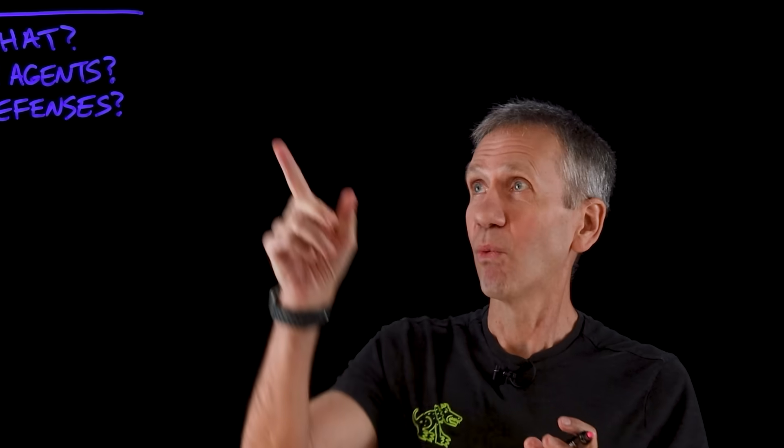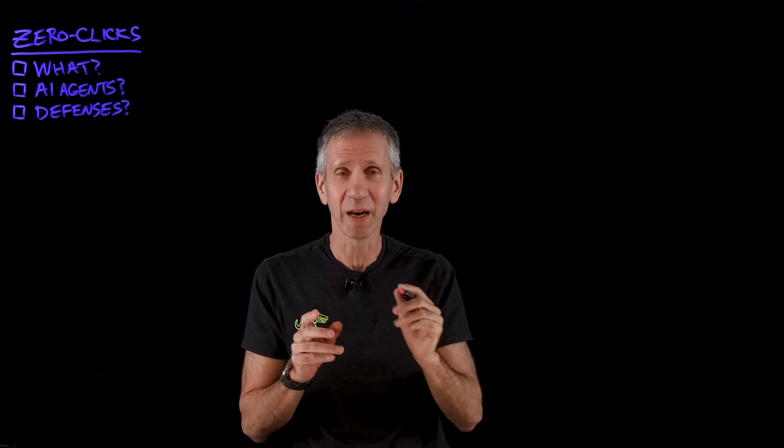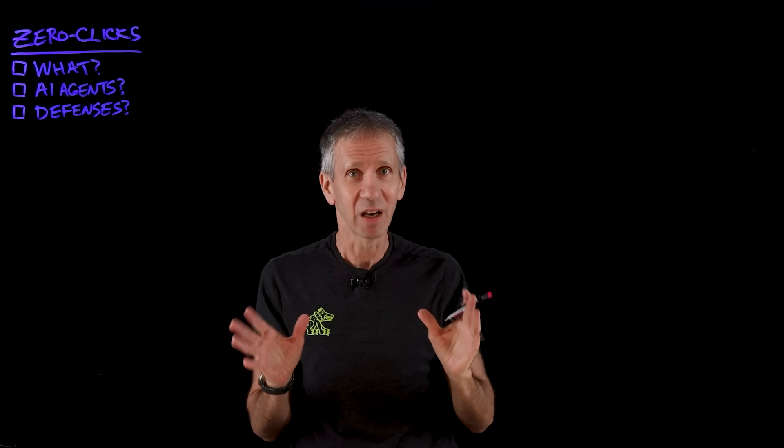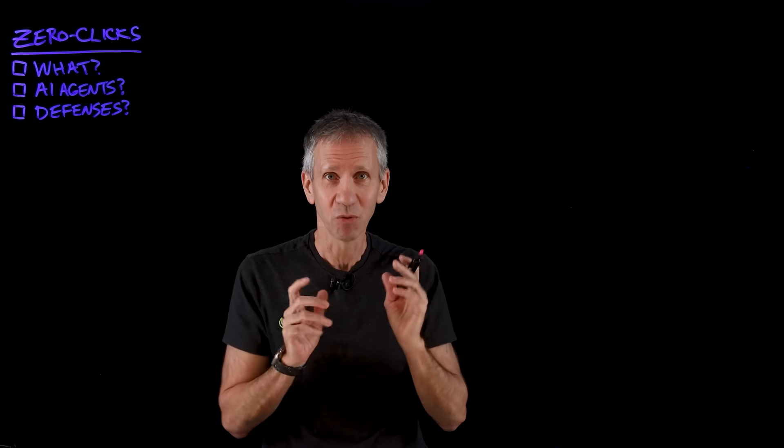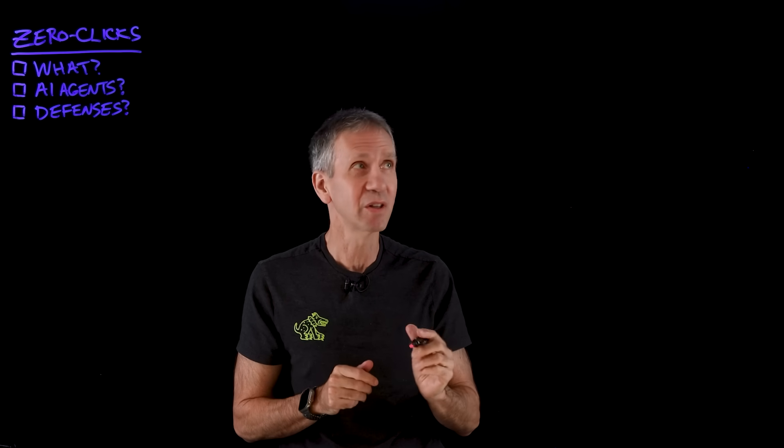Let's start off with: what is a zero-click attack? Well, as its name implies, you didn't click on anything. In other words, the user didn't take any action. The attacker did something, and that was the attack. It's as simple as that. So let's take a look at some historical examples — and there are plenty. A lot of people don't believe this exists, but I'm going to give you real proof points that they do.